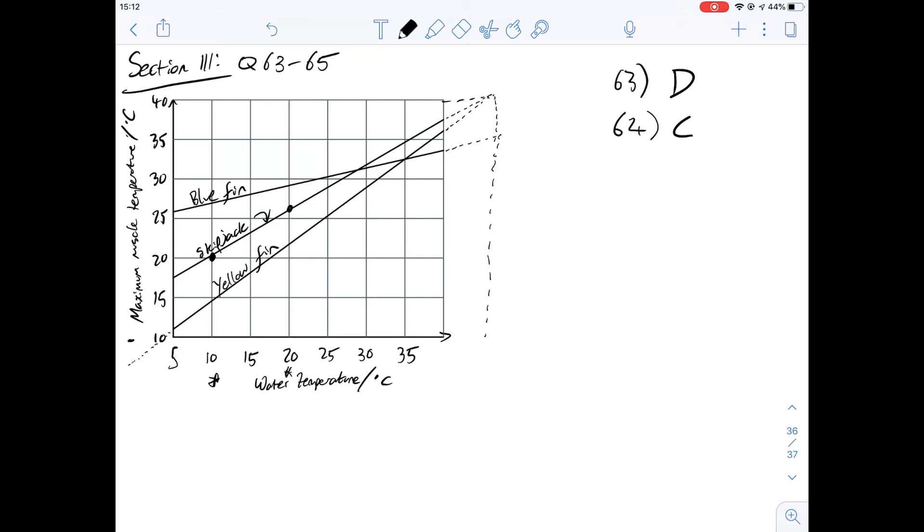And so we can say that the answer for number 64 is going to be that it decreases linearly. Of course it wouldn't decrease in a non-linear way. We're looking at two linear axes and we've got a straight line so it's going to be a linear relationship between the two.